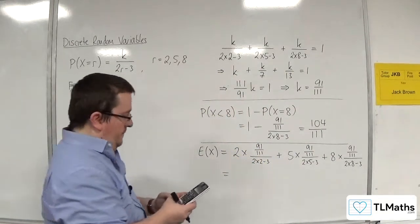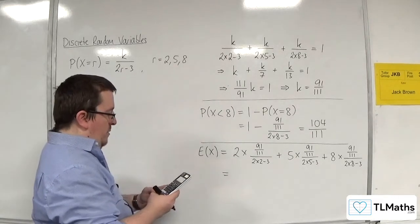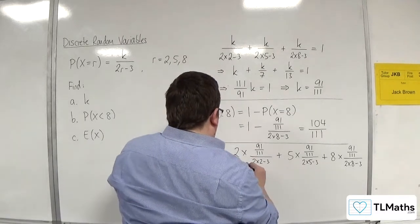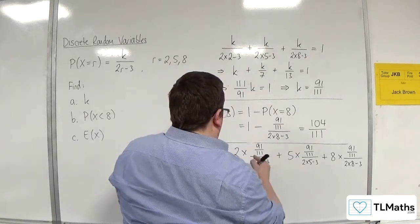Right. OK, so 2 times 91 over 111, then divided by 1. So we get 182 over 111 for that one.